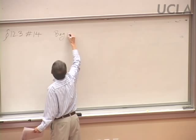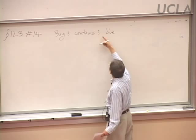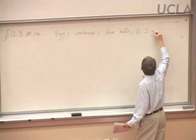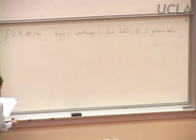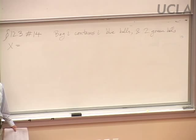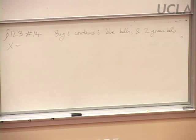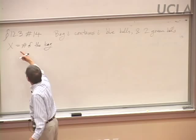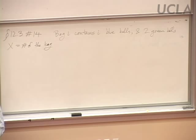Each bag has two greens but a different number of blues. You start by rolling a die to determine which bag to pick. Knowing what we know now, we can bring in a random variable — before, we did this before we'd heard of random variables. When we run this experiment, we're interested in knowing which bag we get, so we can call that X.